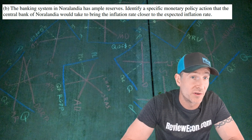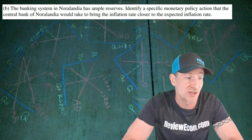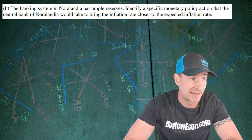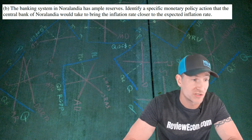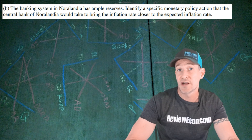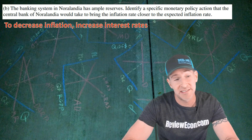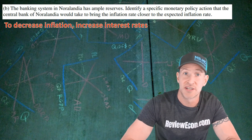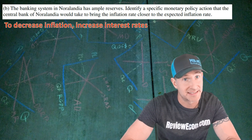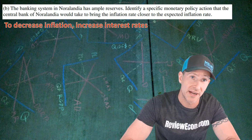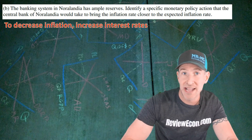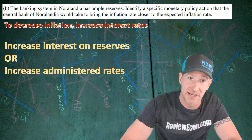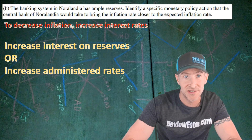For part B, Norolandia has an ample reserve system, and we need to specify a monetary policy action the central bank would take to bring the inflation rate closer to the expected rate. Since we are trying to lower inflation, we need to increase interest rates. That will reduce gross investment, shift aggregate demand to the left, and lower the price level in the AS/AD model, which lowers the inflation rate in the Phillips curve model. To increase interest rates, identify increasing interest on reserves or increasing administered rates — either answer will get you a point.